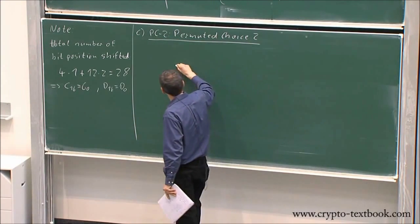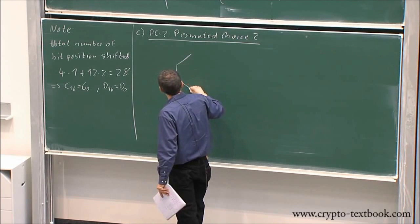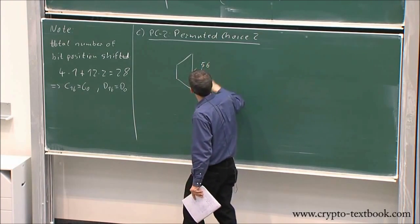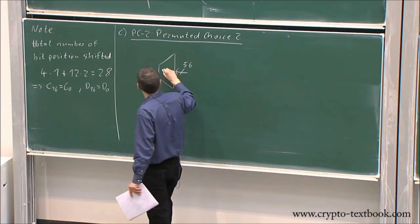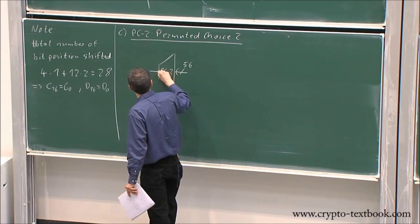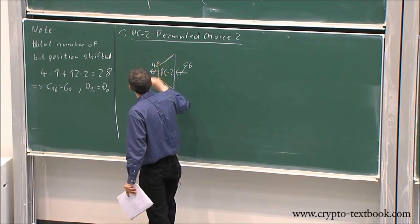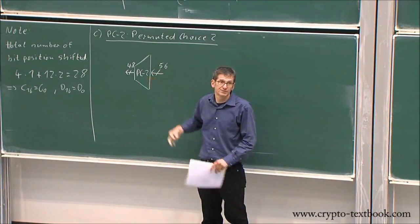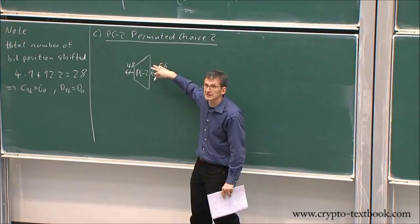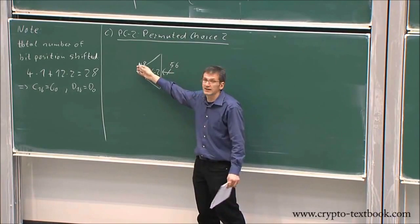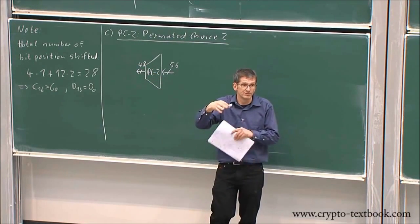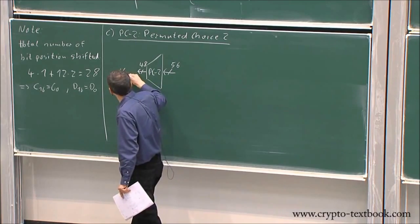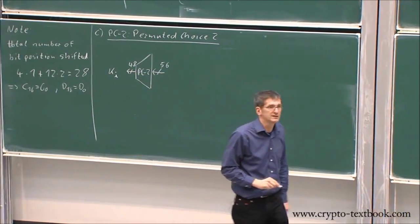What PC2 does is: you go in with 56 bits, and the output equals 48 bits. Eight bits are dropped — fallen gelassen, not connected through. What's left is 48 bits, and they are also permuted. This output is your sub-key ki.